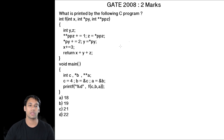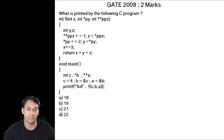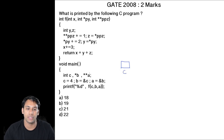Now consider this program. Whenever we execute a program, the program execution starts at the main function, so let us directly jump to the main function. In this main function, we are having three variables, where c is an integer variable.